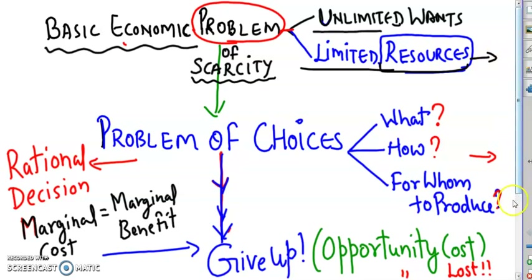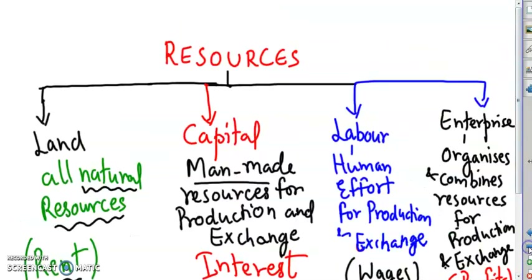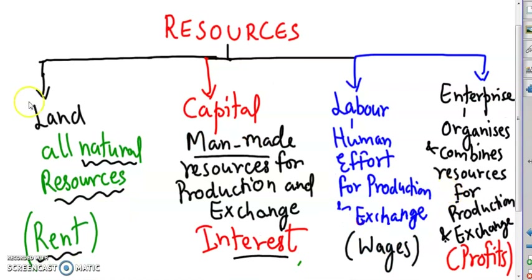In economics, how are these resources classified? These resources are classified into four broad categories: land, capital, labour and enterprise.